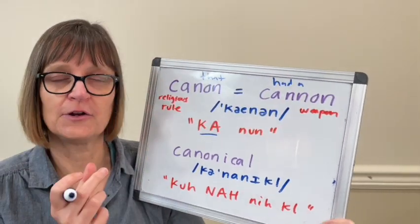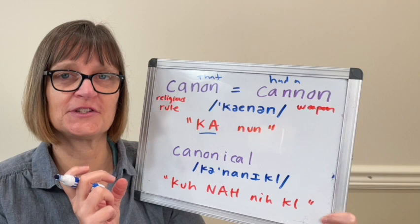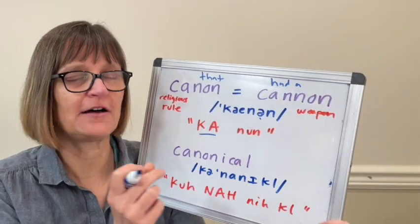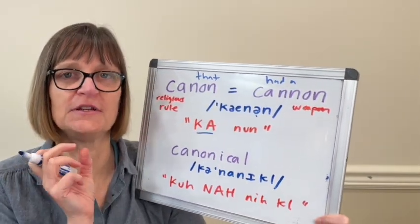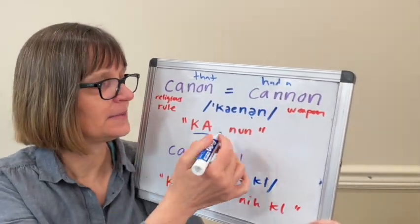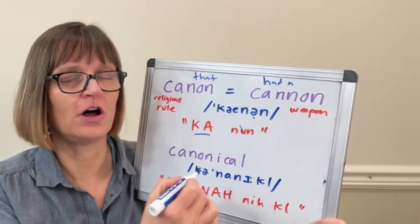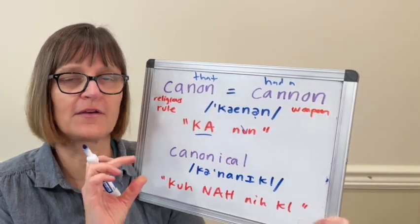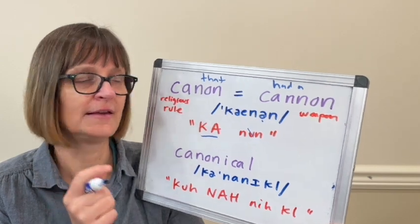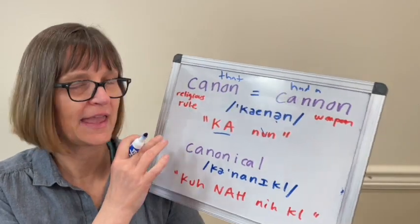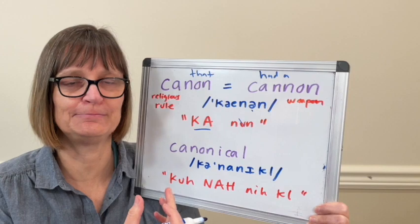Then the letter O, because it's in an unstressed second syllable, is going to be a schwa — very reduced. It's almost like we don't have much vowel there at all. I'm just going between two N sounds: canon. So 'ca' should be long, the second part should be short: canon.